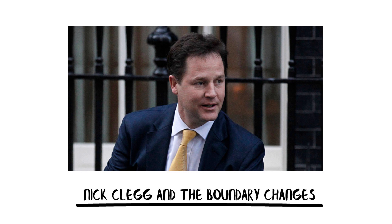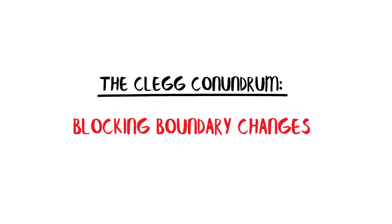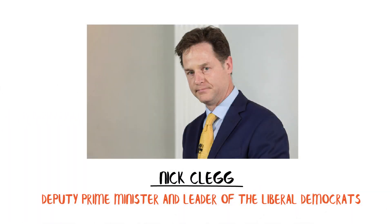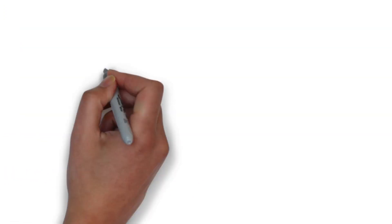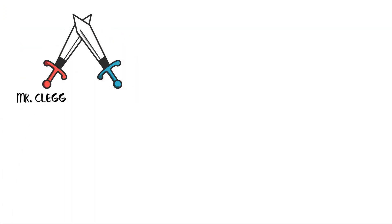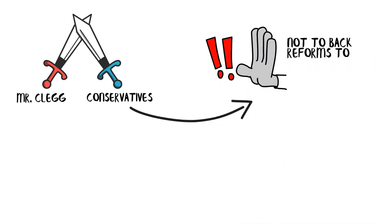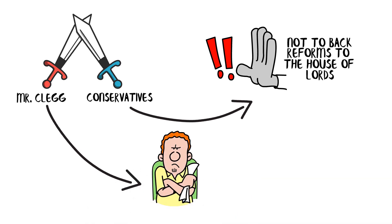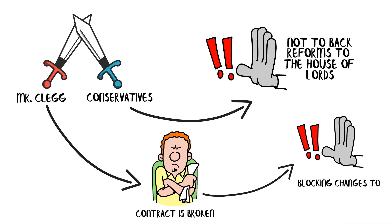Strap in — it's going to be a bumpy yet enlightening ride. The Clegg Conundrum: blocking boundary changes. Our tale begins with Nick Clegg, then Deputy Prime Minister and Leader of the Liberal Democrats. Mr. Clegg found himself in a pickle when the Conservatives, his coalition partners, decided not to back reforms to the House of Lords. In what can only be described as a political tit-for-tat, Clegg, feeling the coalition contract was broken, retorted by blocking changes to parliamentary boundaries — a move seen as beneficial to the Conservatives.